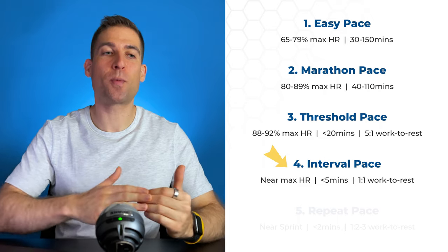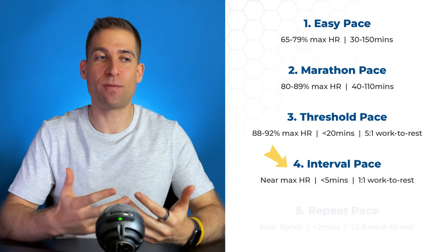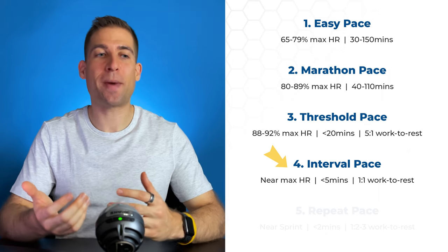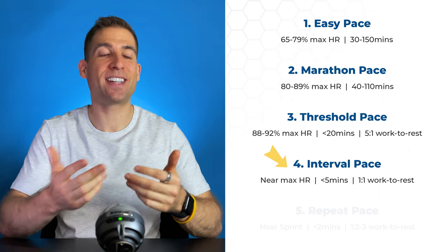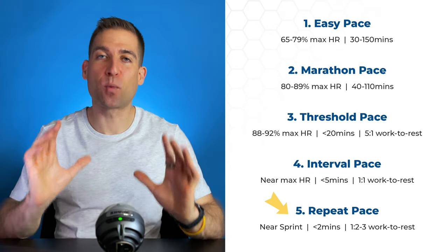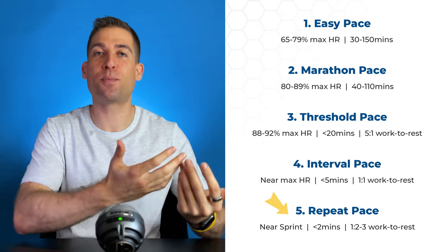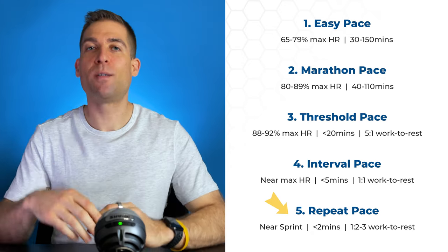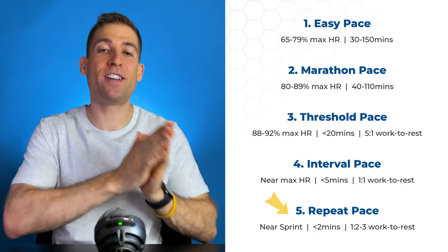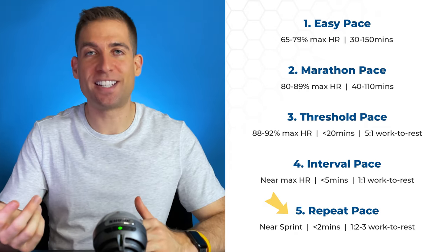Interval Pace: these are runs performed at near maximum heart rate, designed to increase your VO2 max. You'll only be performing these for a maximum of 5 minutes, utilizing a 1-to-1 work-to-rest ratio. And last, Repeat Pace: these are near-sprints designed to improve your speed, power, and running economy. Most repeats are performed in under 2 minutes and utilize a 1-to-2 or 1-to-3 work-to-rest ratio. They make up the least of your training plan.